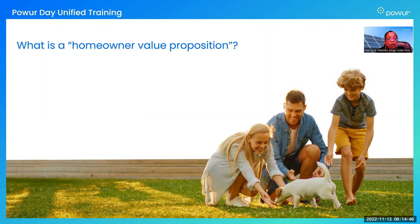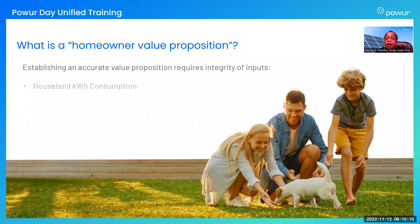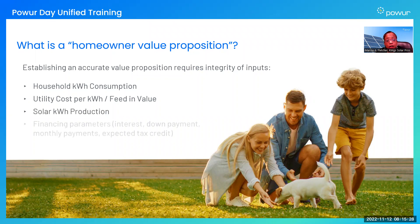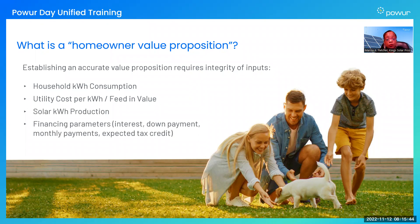The value of solar is determined by the customer's current situation with the utility and how much we can save them by going solar. We need to know how much they pay for power right now and how high their electric bills are. Defining a customer's value proposition is based on real, accurate data from the utilities — not guesswork. That value proposition is based on a number of factors, including the kilowatt-hour consumption of that household, the cost they're paying per kilowatt, their solar kilowatt-hour production, and the financing parameters — interest rates, down payments, and monthly payments. Each homeowner's value proposition is different.